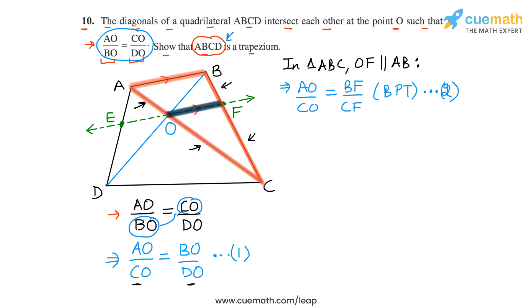Now if we compare equations 1 and 2, in equation 1 we have the LHS as AO by CO again, and this means that the RHS in the two equations will be equal. So from 1 and 2 we can now say that BO by DO is equal to BF by CF.